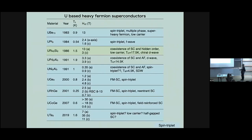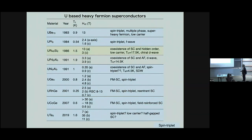Looking at superconductivity, there are many actinoid materials. The first heavy-fermion actinoid superconductor is UBe₁₃, already in 1983. You can see the list here — the light blue entries are supposed to be spin-triplet superconductors. There are a lot of candidates for spin-triplet superconductors. Here are the ferromagnetic superconductors, and today I'm going to talk about the last material, uranium ditelluride, which was discovered in 2019 by Ran et al.